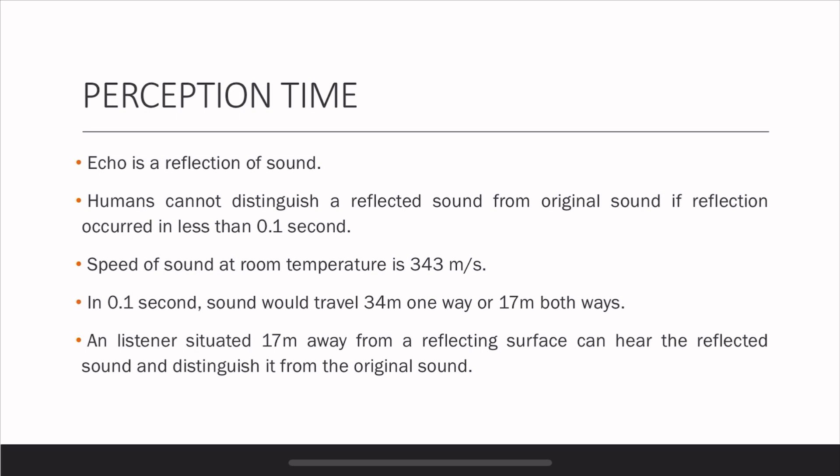We know the speed of sound at room temperature is 343 meters per second. We can actually calculate what the minimal distance is based on this minimal time. So in 0.1 second, sound will travel 34 meters one way, or 17 meters considering a back and forth transmission. So a listener situated 17 meters from a reflecting surface can actually perceive the reflected sound and hear the echo. Any distance less than this, they will not be able to perceive an echo.